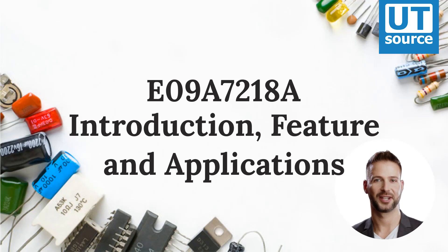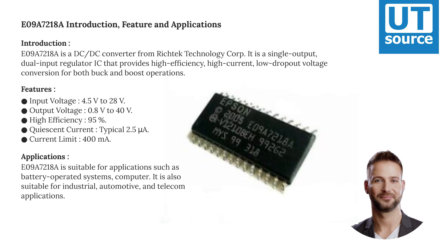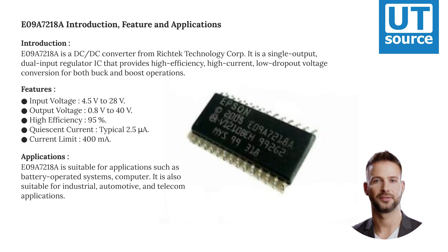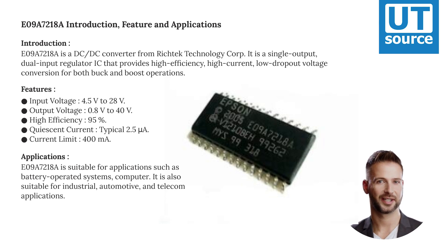E09-A7218A Introduction, Features and Applications. The E09-A7218A is a DC-DC converter from RichTech Technology Corp. It is a single-output, dual-input regulator IC that provides high-efficiency, high-current, low-dropout voltage conversion for both buck and boost operations.